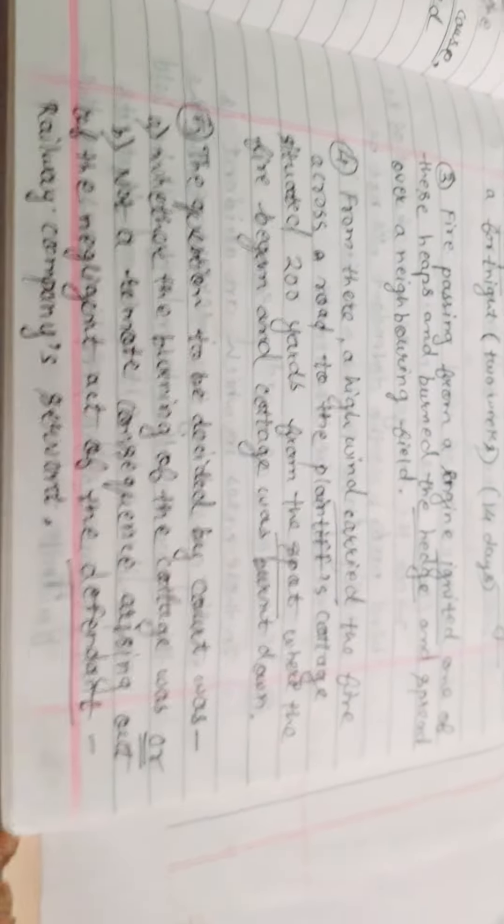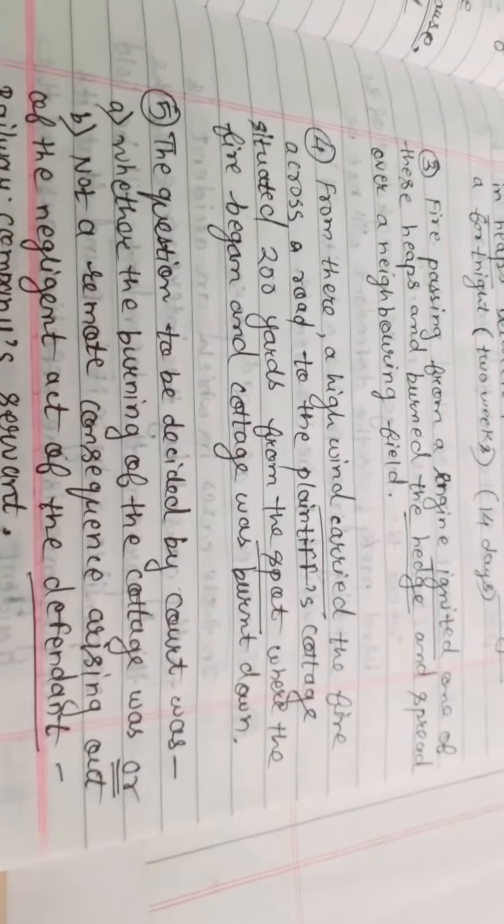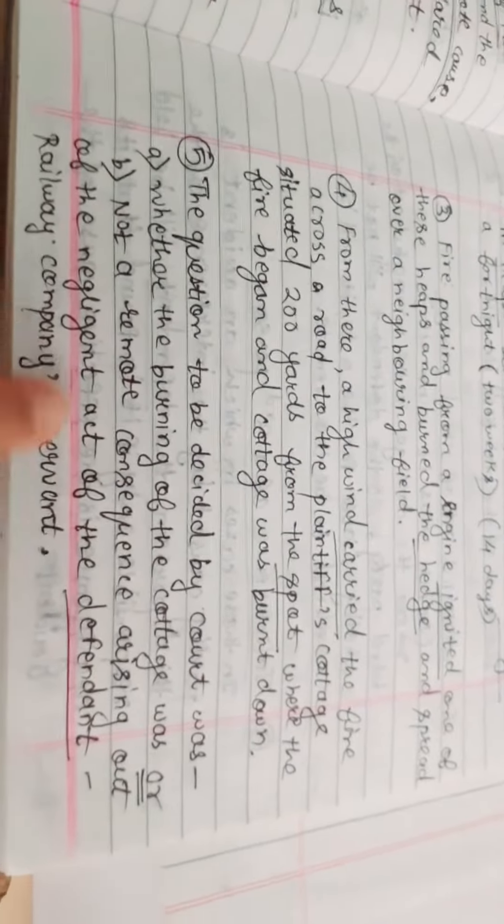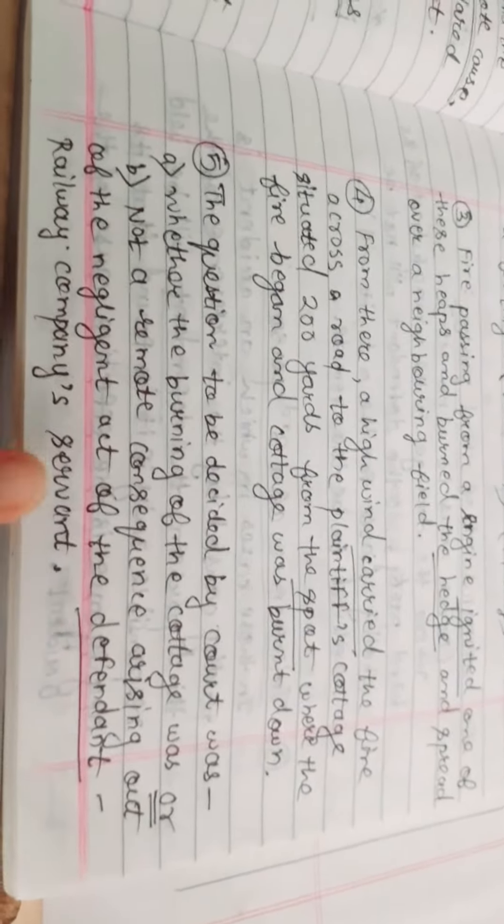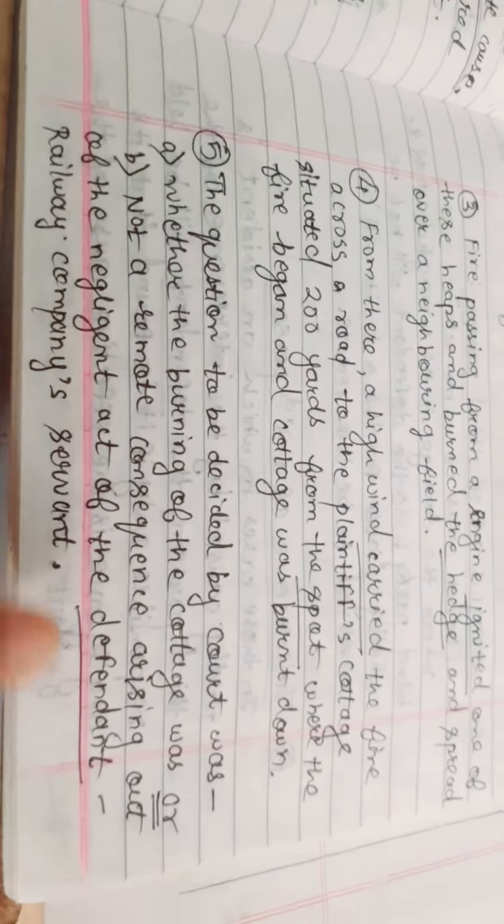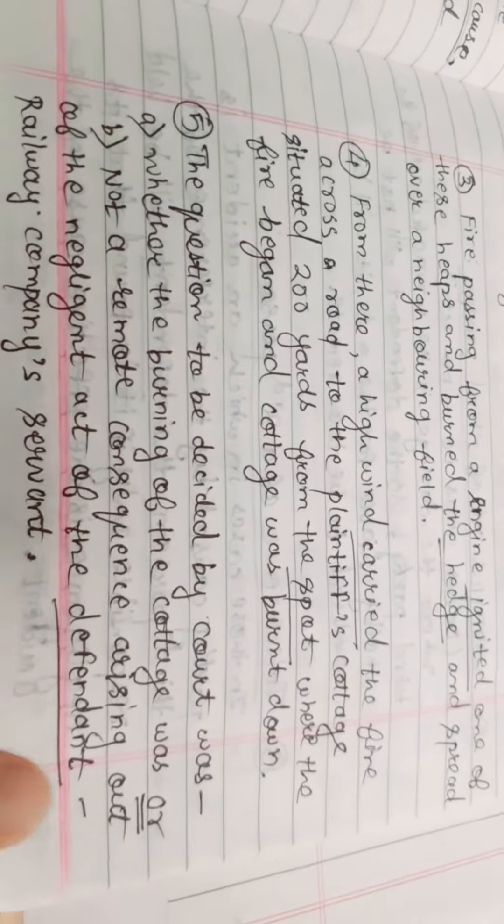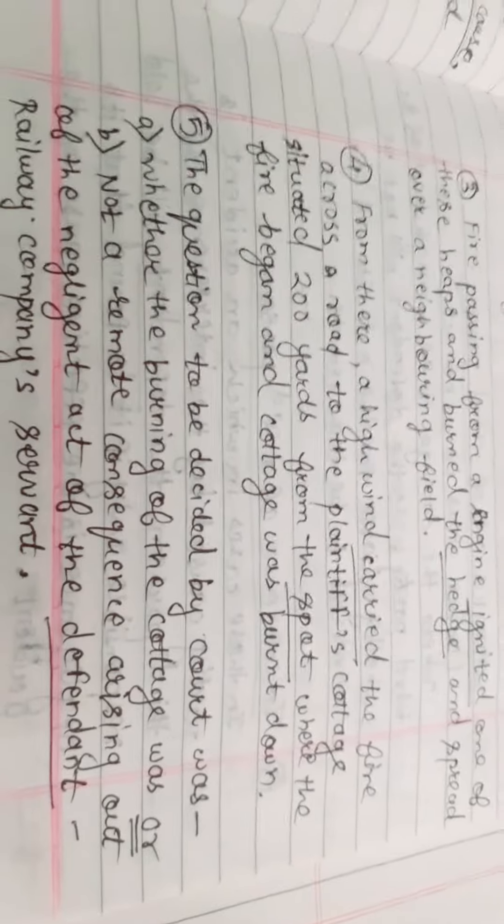The question to be decided by the court was whether the burning of the cottage was or was not a remote consequence arising out of the negligent act of the defendant railway company's servant. Here the question was who is liable - the company or that servant.